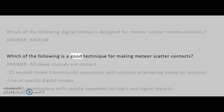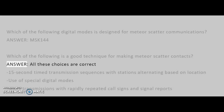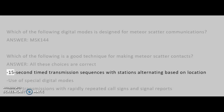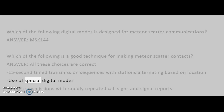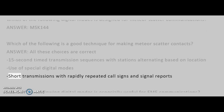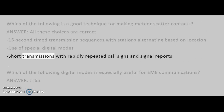Which of the following is a good technique for making meteor scatter contacts? Answer: All these choices are correct — 15-second time transmission sequences with stations alternating based on location, use of special digital modes, and short transmissions with rapidly repeated call signs and signal reports.